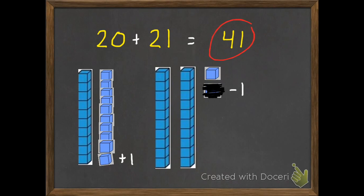So 20 plus 21 equals 41. So even though that was an easy problem at first, switching that one block made it even easier to do mentally.